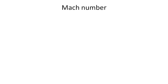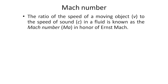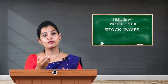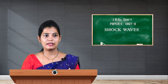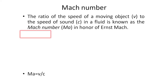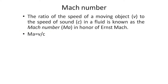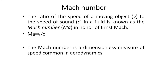Now let's look at Mach number. The ratio of the speed of a moving object v to the speed of sound c in a fluid is known as the Mach number, named in honor of scientist Ernst Mach. The Mach number is indicated as Ma = v / c. It is a dimensionless measure of speed commonly used in aerodynamics — dimensionless because v and c have the same units, which cancel out.